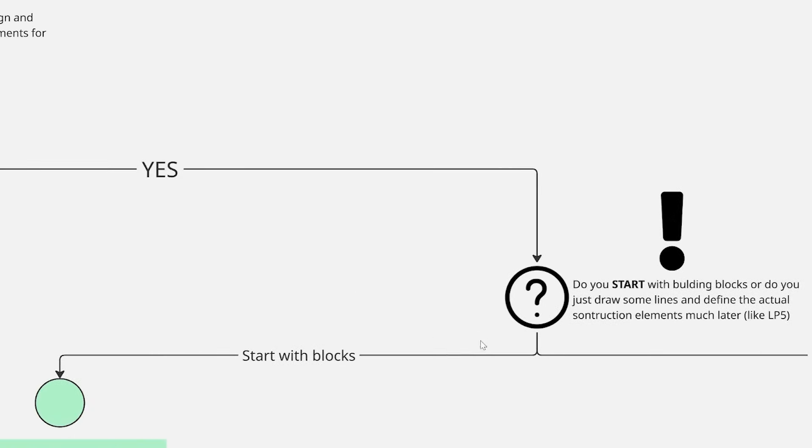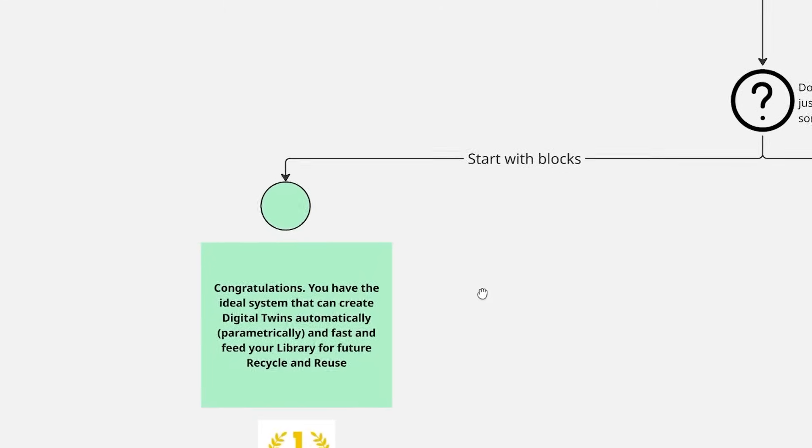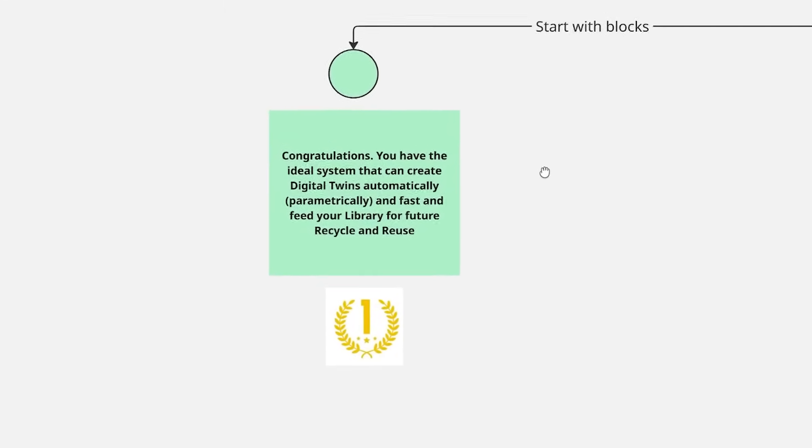Now let's reach the gold medal. Do you start with building blocks, or do you just draw some lines? If you say you actually start with building blocks — congratulations, you have the ideal system that can create digital twins automatically, parametrically, and fast, and feed the library for future reuse and recycling. The idea is that if you have more or less an idea of what prefabricated elements you will use, you have a system you developed and a library from previous objects. You then parametrically define how to position those elements in space — writing code or making Grasshopper definitions that pull objects from the library. Some elements you create newly for that project, but you populate your library of assets and place them in space.